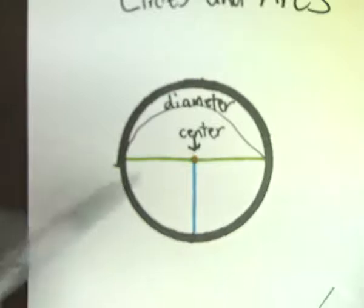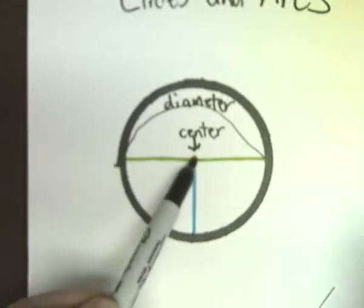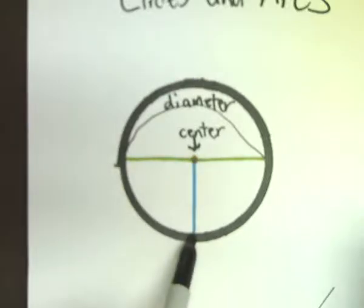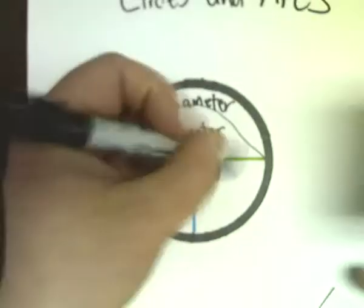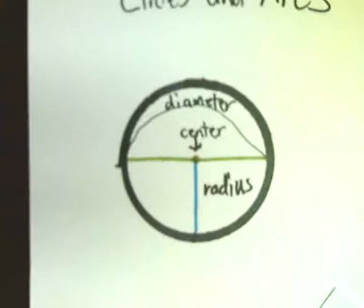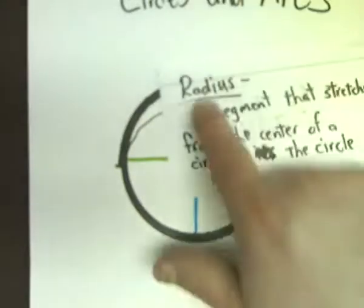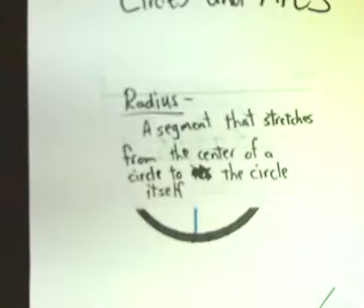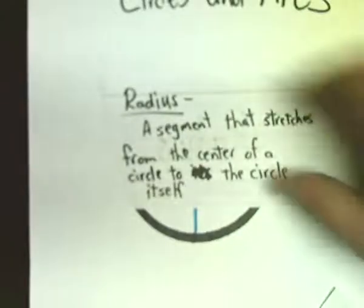If I have a line that goes from the center of a circle to a single point on the circle, that is referred to as a radius. That works out pretty well. And I apologize for the camera zooming in and out at its will, but, you know, not the best quality materials. A radius, once again, is a segment that stretches from the center of a circle to the circle itself.